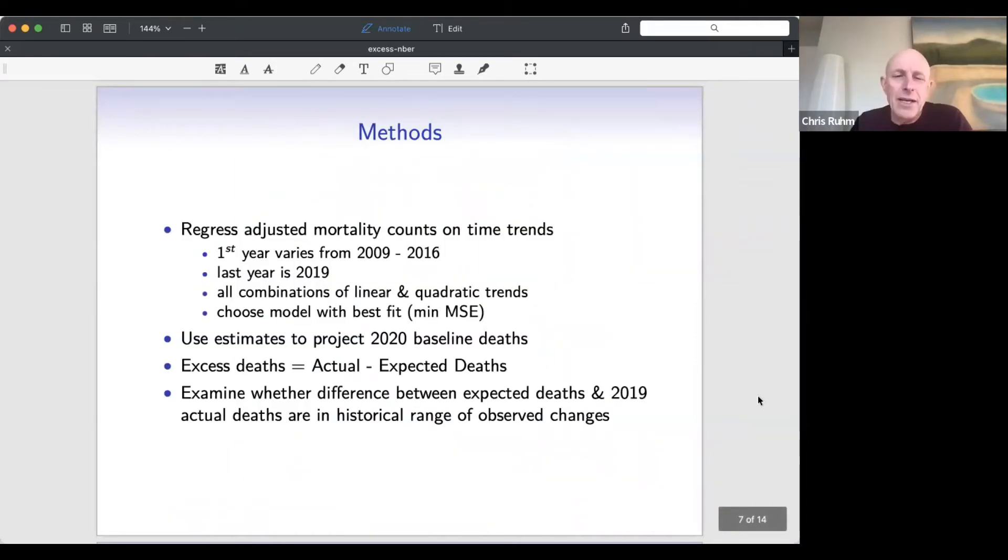And actually, when we look at specific causes or groups, they're even larger. There's also an implication that if we're looking at some of the earlier estimates where they have very tight confidence intervals, they're actually not very credible because there just is this large variance that we can't perfectly explain. So that'll be relevant as we go forward. Just very quickly, I'm not going to spend a lot of time on this, but if we look at the methods here, the strategy is to regress these adjusted mortality counts, adjusted for that excess January volatility, on time trends. And these can be linear or quadratic time trends. And what I do here is I allow the period to vary. The starting year can vary anywhere between 2009 and 2016. And I'll estimate linear and also quadratic time trends and then choose the model that has the best fit.